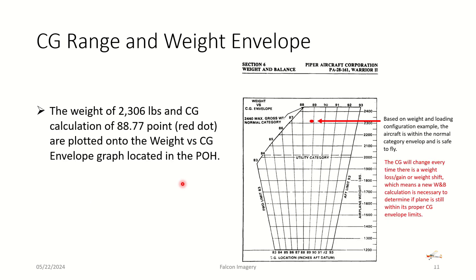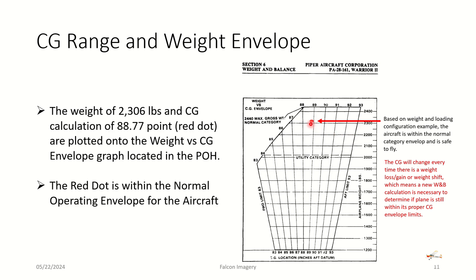Once we calculate the center of gravity and the max gross weight — in this case 2,306 pounds and 88.77 inches — we plot it on the weight versus CG envelope table or chart found in the POH. This is the normal category envelope, and there is also the utility category. We're talking about the normal category today. The point sits within the envelope, which is a good thing. With the dot sitting here in the middle, we know we're in the normal category range, so the aircraft will be able to fly properly through all necessary operations: takeoff, climb, cruise altitude, descent, and a normal flare for landing. If the CG had been outside the envelope — forward or aft — we'd have the concerns highlighted earlier.